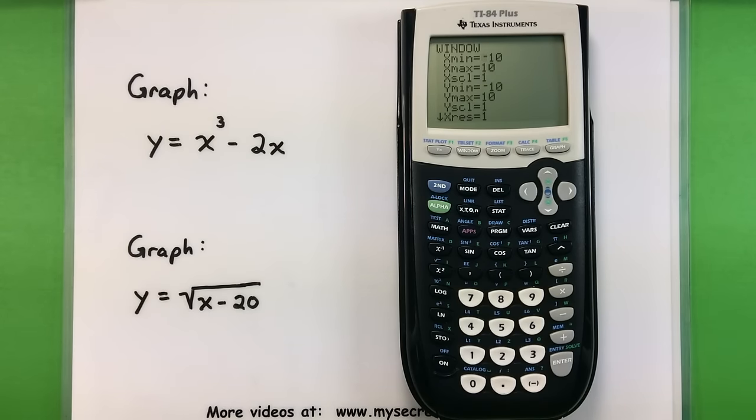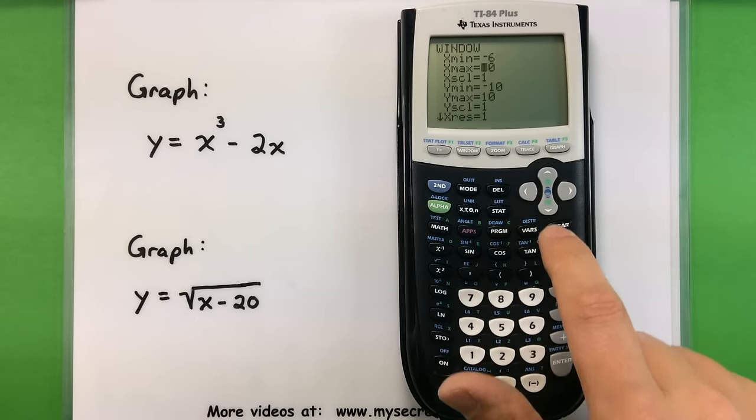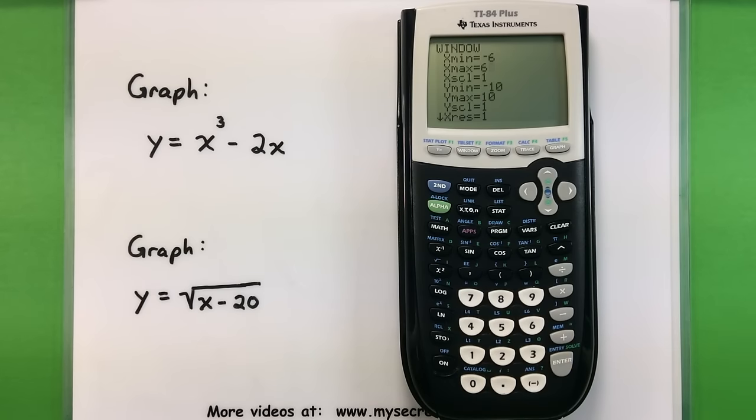Depending on what your equation looks like, you could get a better picture by adjusting these. So I'm going to set this for negative 6, arrow down, up to 6, arrow down some more, and negative 6, 6.